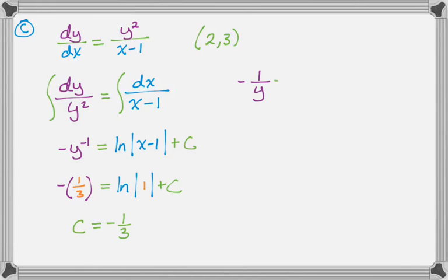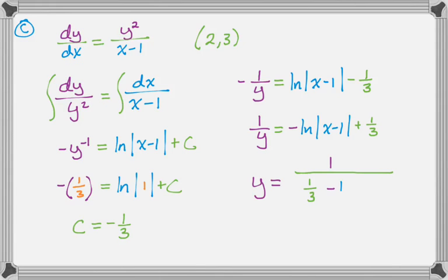So if I move up here, so I have negative 1 over y is natural log of x minus 1, minus 1/3. I'm going to multiply through by a negative, so I'm showing like a ton of work. But there's nothing wrong with that on the AP exam, right, because you want all the points you can get. And I'm going to flip it over. So I get 1 over (1/3 minus the natural log of the absolute value of x minus 1).